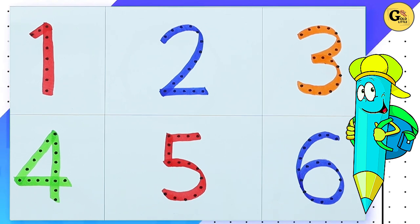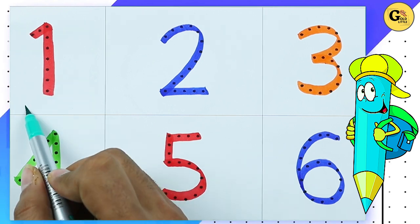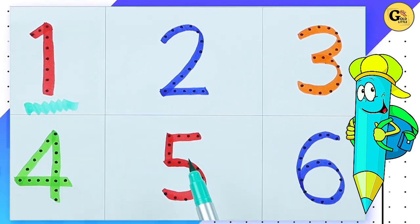Hello friends, today we learn 1 to 10 numbers and recognize which color is this. This is red color. Red color number 1. It's number 1.